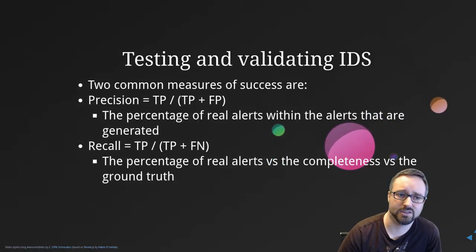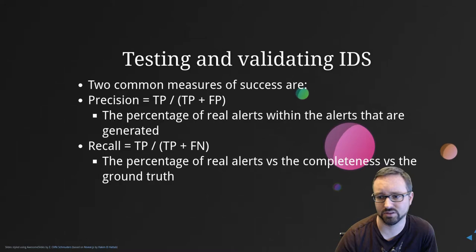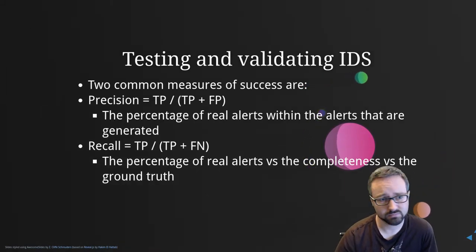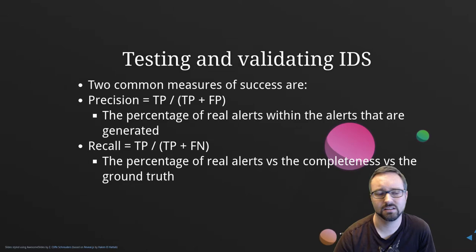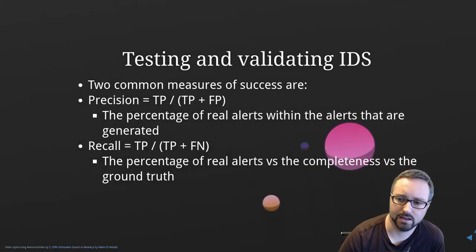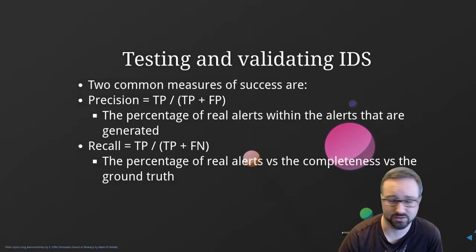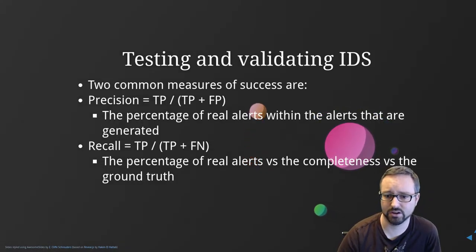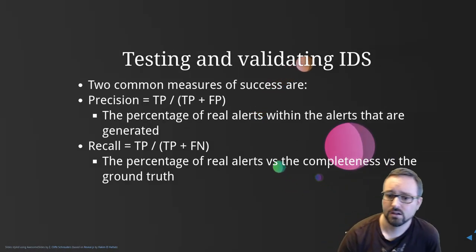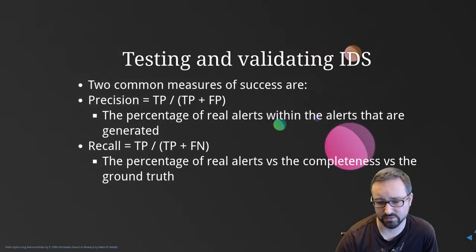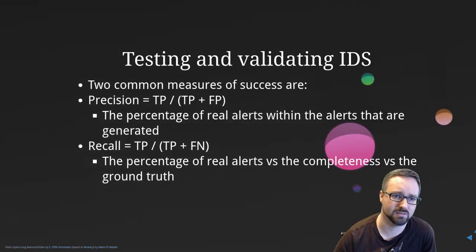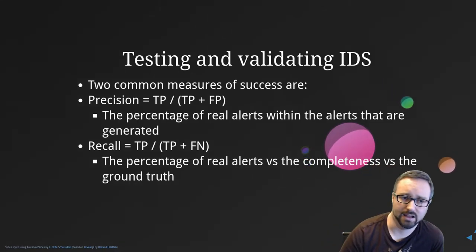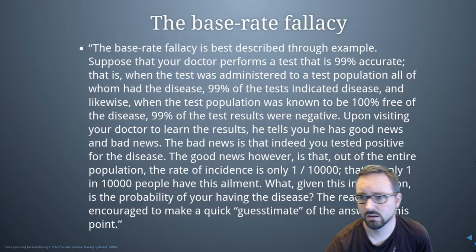When trying to validate an IDS system, there are two common measures of success. First is precision — the percentage of real alerts within all generated alerts — calculated as true positives divided by true positives plus false positives. Second is recall — true positives divided by true positives plus false negatives — which gives the completeness of detection against ground truth, showing whether real attacks are being missed.